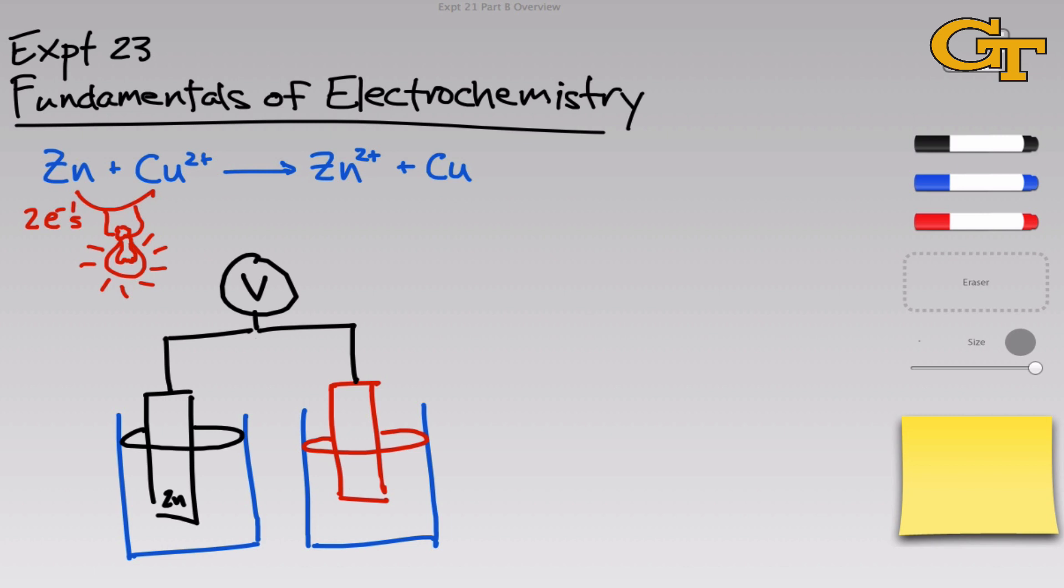To remind you what's in here, we have a strip of zinc metal, and that's sitting in a zinc 2+ aqueous solution. And on the right, we have copper metal, and that's sitting in an aqueous solution of copper 2+ ions. I want you to take a minute and examine this experimental setup, and ask yourself which direction are electrons going to flow. The reaction as it's written at the top here is spontaneous. So how will electrons move?